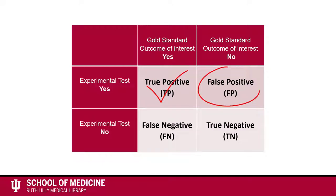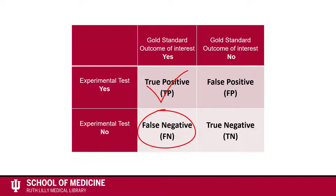The data in the upper right-hand box represent the number of experimental tests that incorrectly identified a positive test. In other words, the reference standard found they were negative, but the experimental test found they were positive. They are the false positive tests. The data in the lower left-hand box are the number of tests identified as positive by the reference or gold standard, but identified as negative by the experimental test. They are the false negative tests.